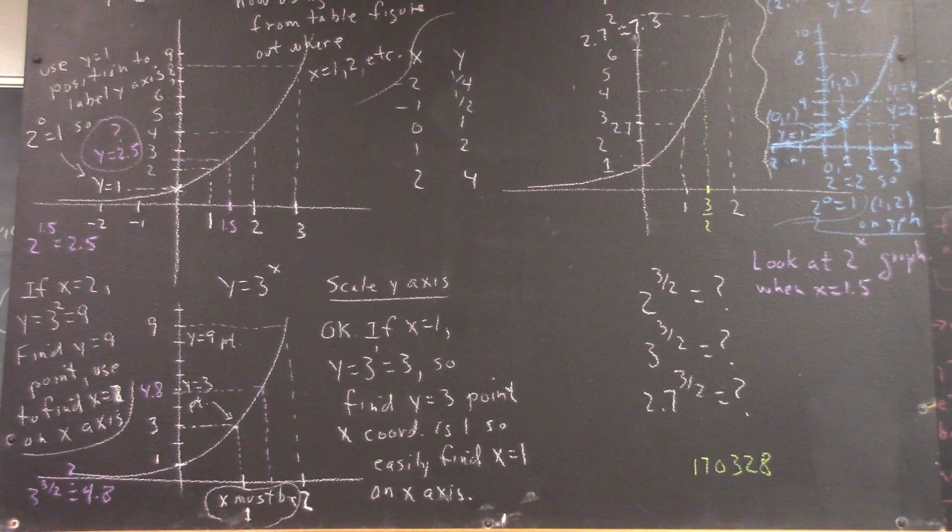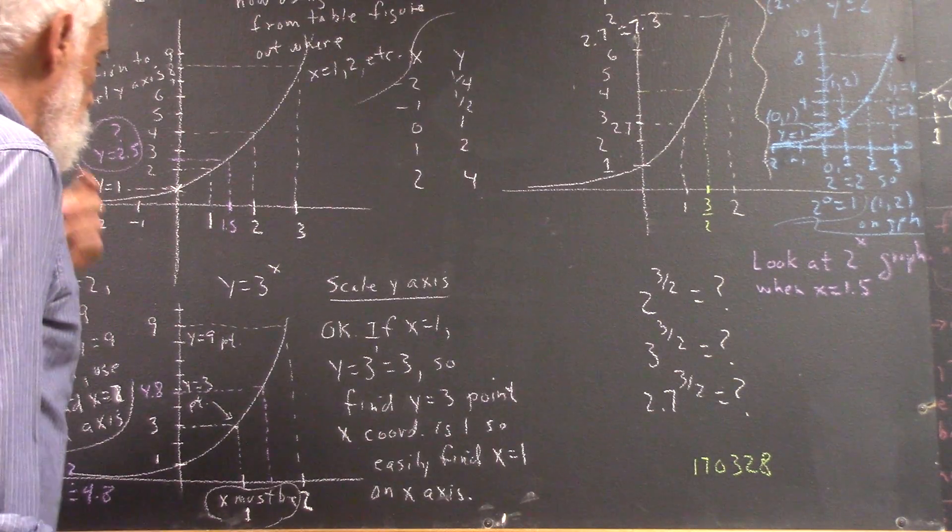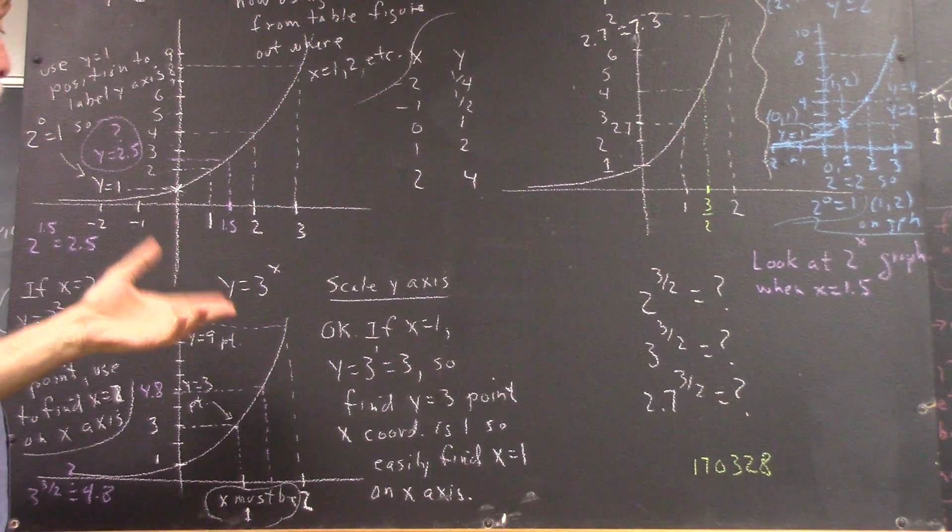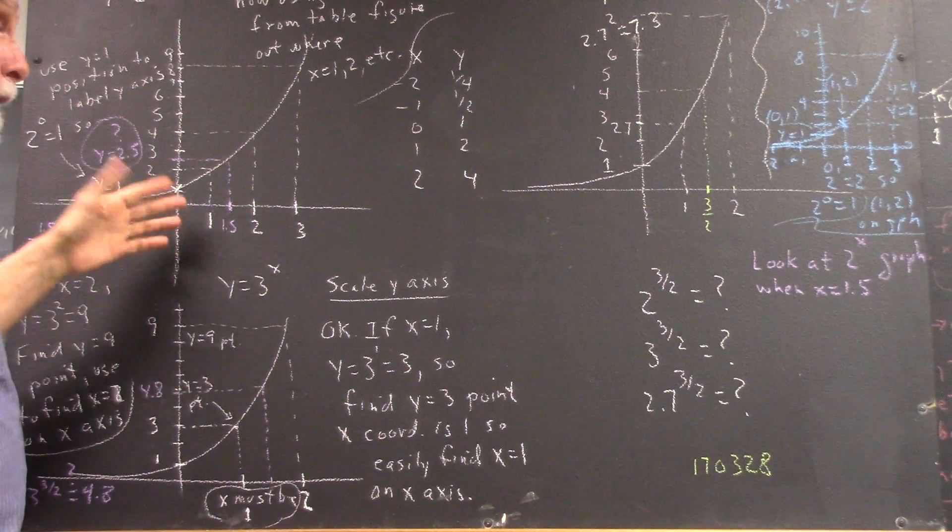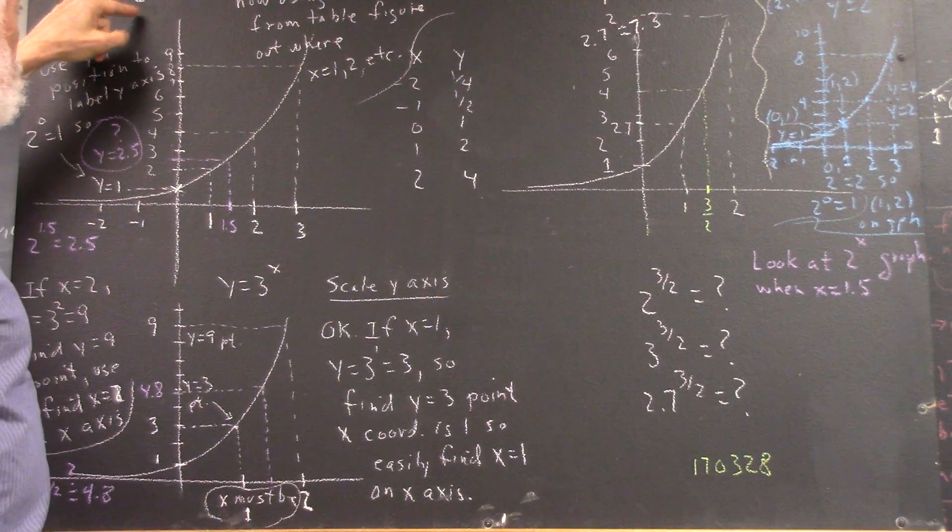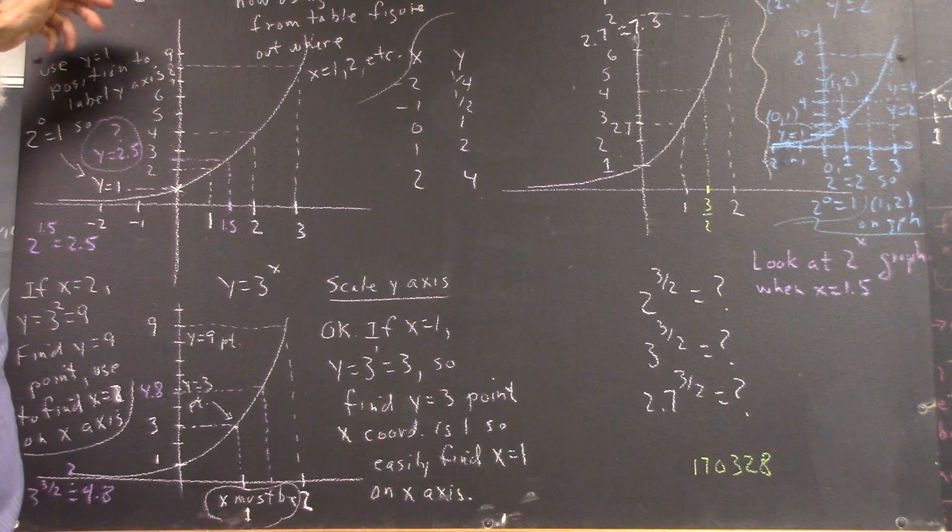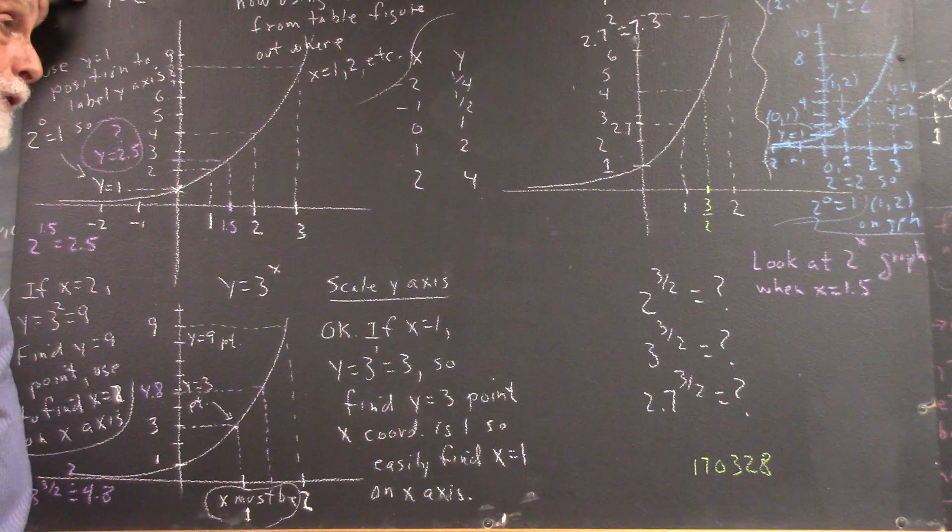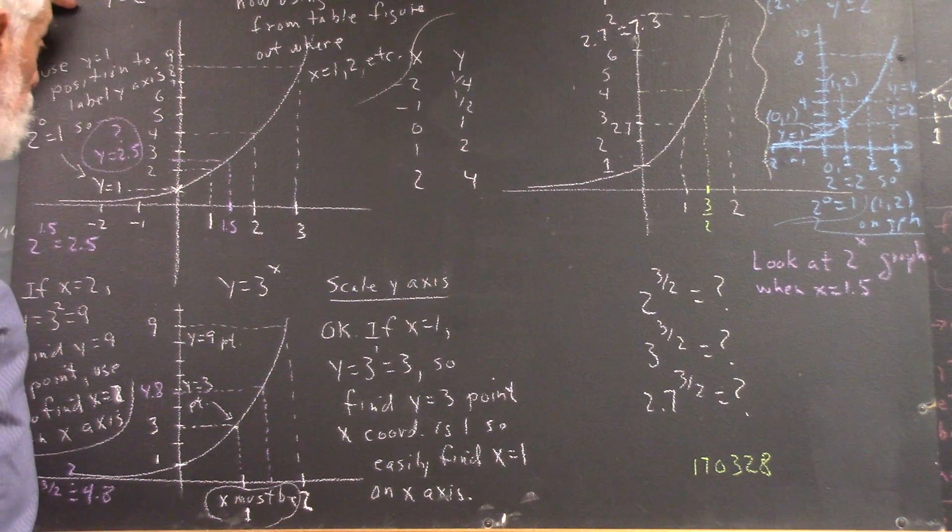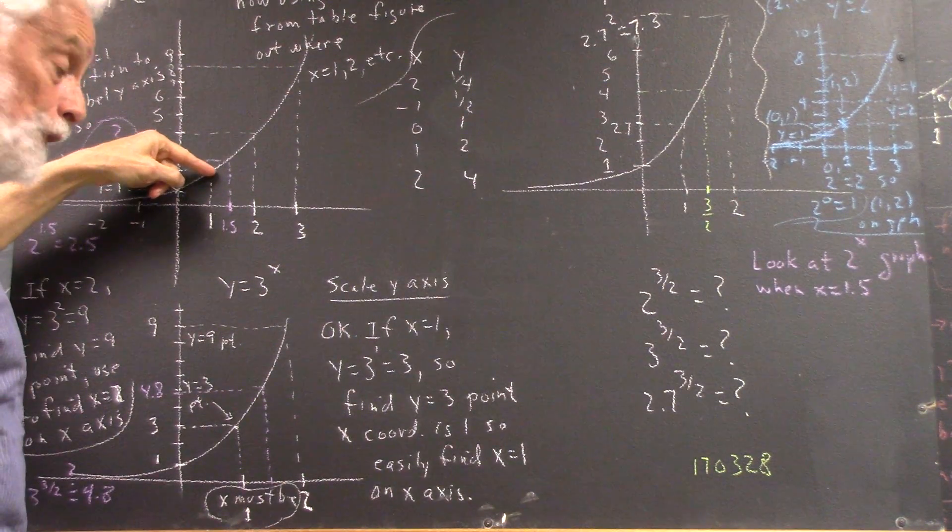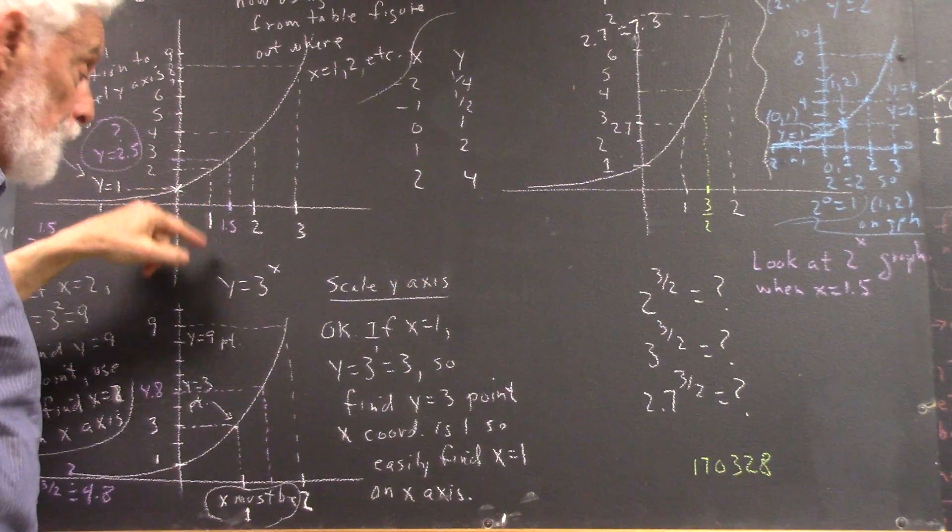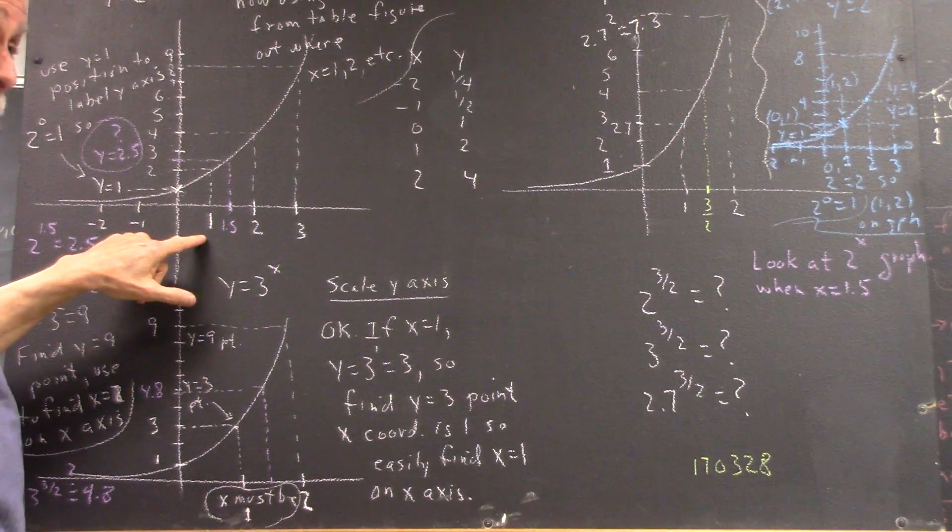Then we check to find out where x equals 1. We didn't know x was 1 here. This is before. We said, okay, 2 to the 1 is 2, so when x is 1, y has to be 2. Where on the graph is y equal to 2? Well, here. And now we come down here and there's where x has to equal 1.